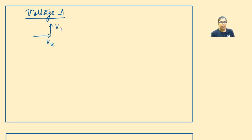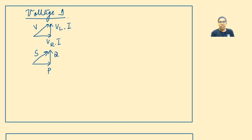In the voltage triangle: this is VR, this is VL, and this is V. In the power triangle: this is P, this is Q, and this is S. Since these are series circuits — RL series as well as RC series — the current flowing through the circuit remains the same. So for a given voltage triangle, if I multiply I throughout — where I is actually I_RMS and V is V_RMS — we get: this power is P, this power is Q, and this power is S.